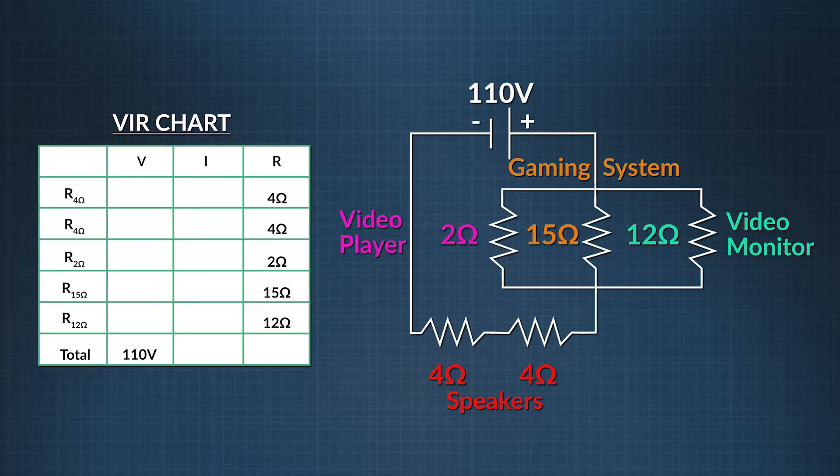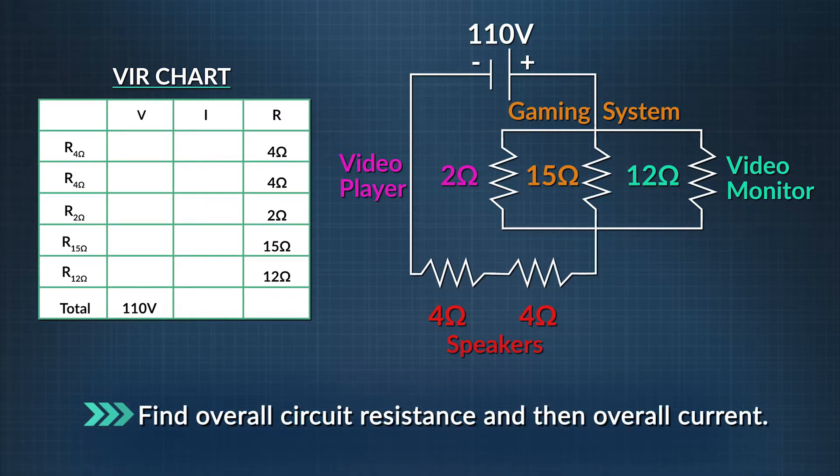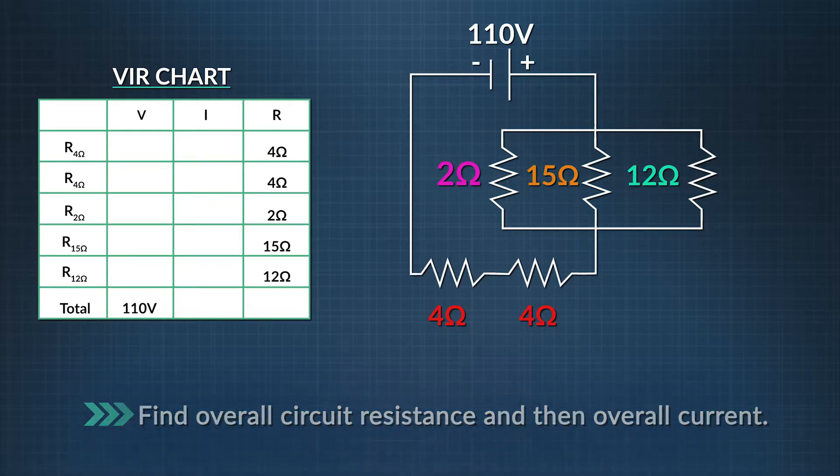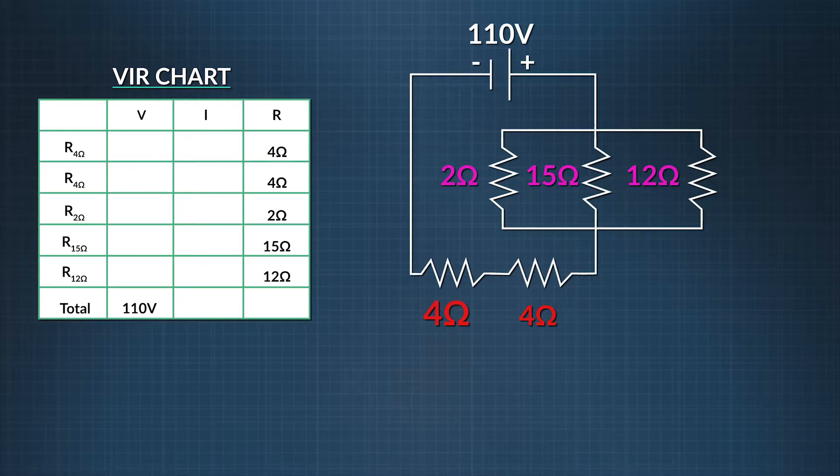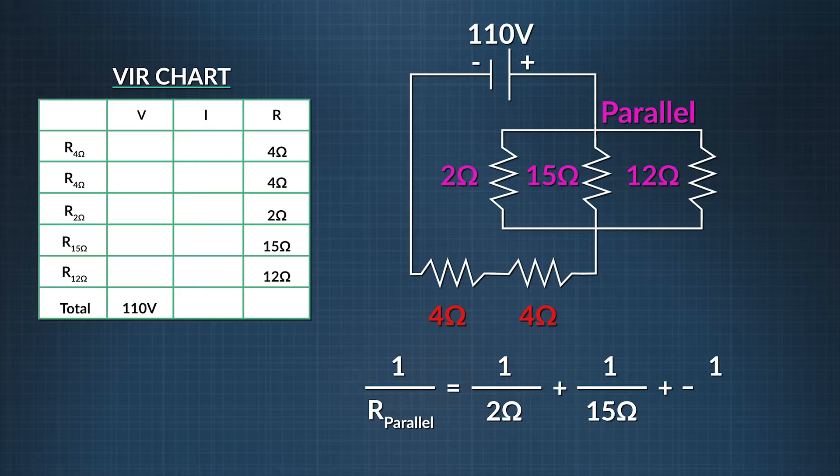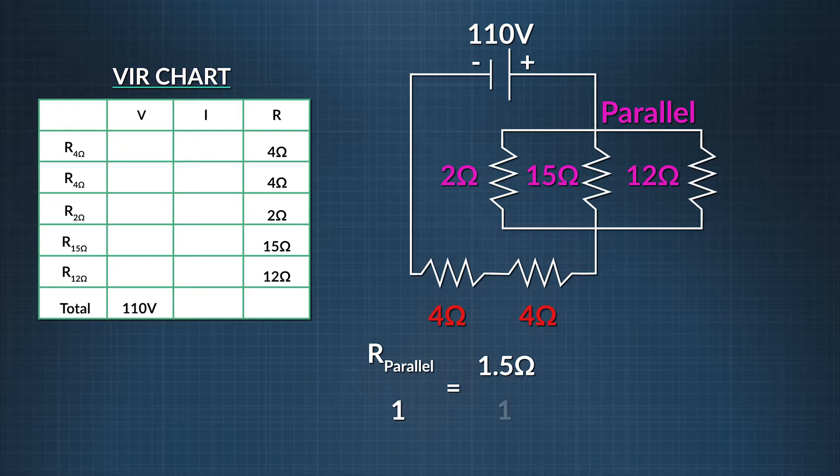Often, our first step in solving complex circuits is to find overall circuit resistance and then overall current. We do this by adding circuit resistors together until we are left with a single equivalent resistance for the whole circuit. Remember that when you add resistors, you must be aware of whether you are adding in-series or parallel, since different addition rules apply to each. As we go, we'll see updated circuit diagrams that reflect the resistors we've combined. There are lots of approaches we can take to solve these problems. Let's begin where resistors are in parallel in a circuit. 1 over our equivalent resistance for our resistors in parallel equals 1 over our first resistor in parallel, 2 ohms, plus 1 over our second resistor in parallel, 15 ohms, plus 1 over our third resistor in parallel, 12 ohms. When we add the three resistors in the video branches, we get an equivalent resistance of 1.5 ohms.